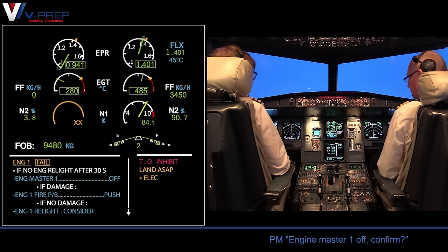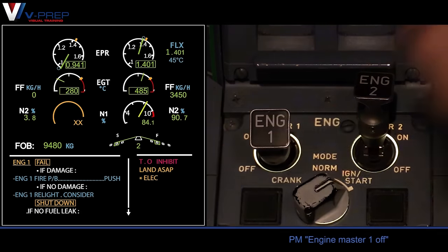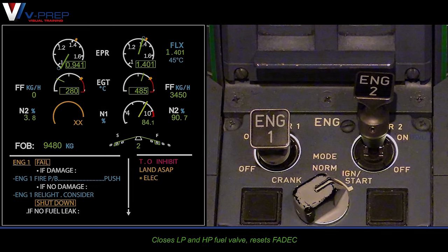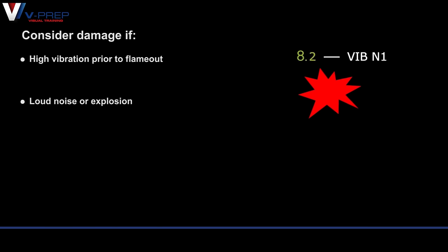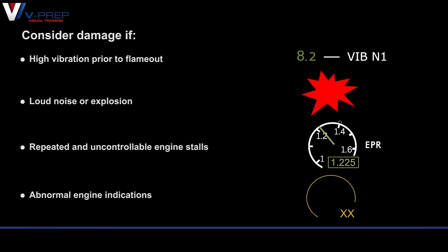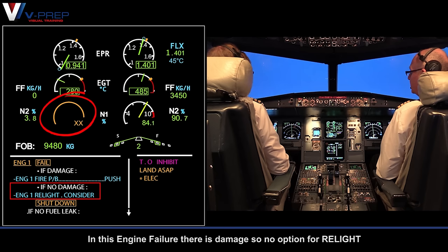Engine master 1: Off — Confirm. Consider damage if: high vibration prior to flame out, loud noise or explosion, repeated and uncontrollable engine stalls, or abnormal engine indications. In this engine failure there is damage, so there is no option for relight.